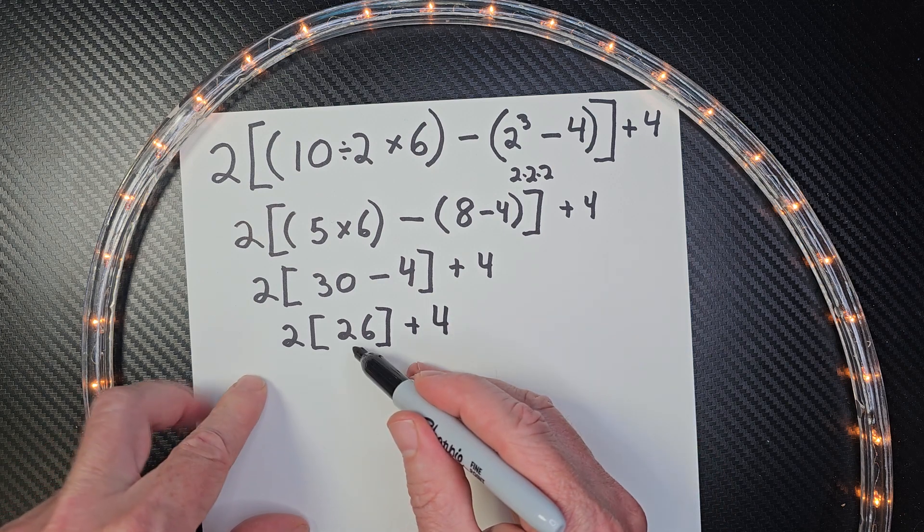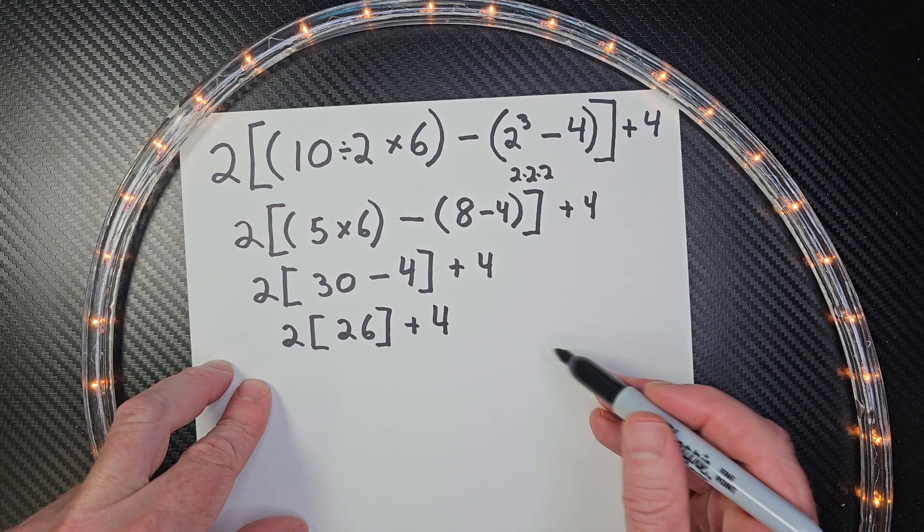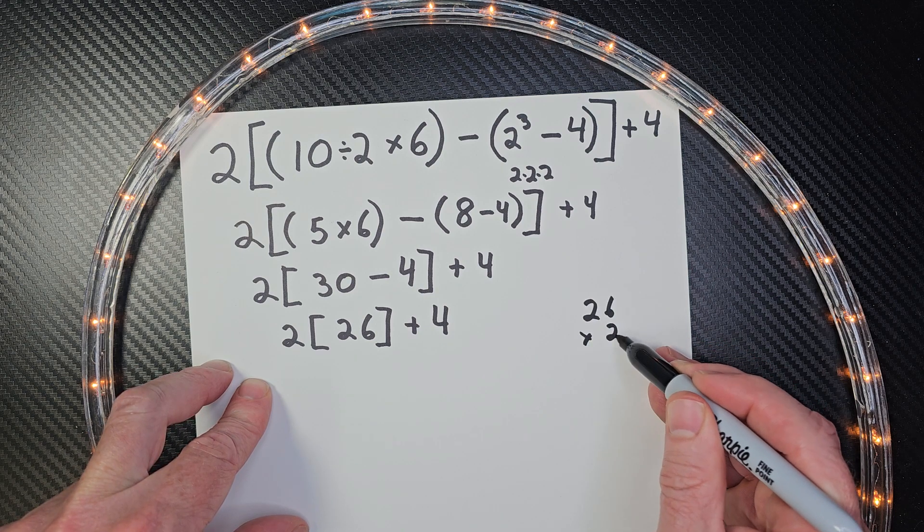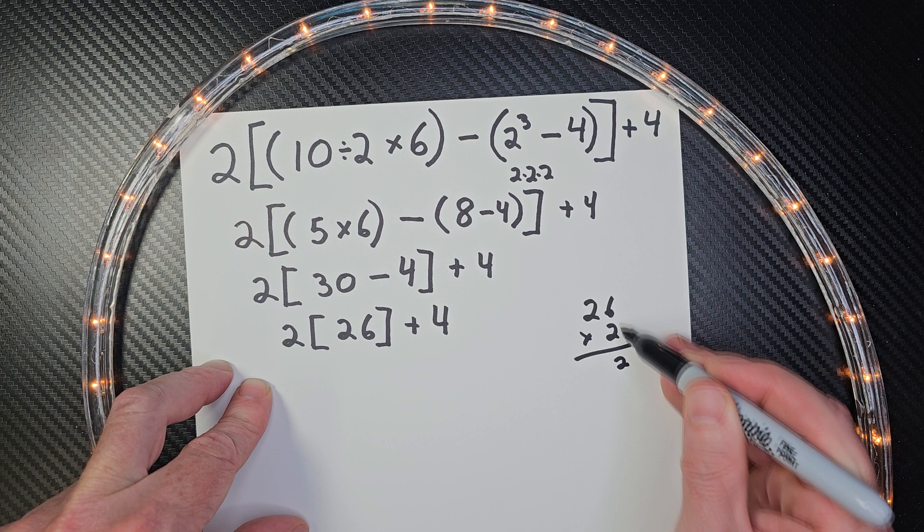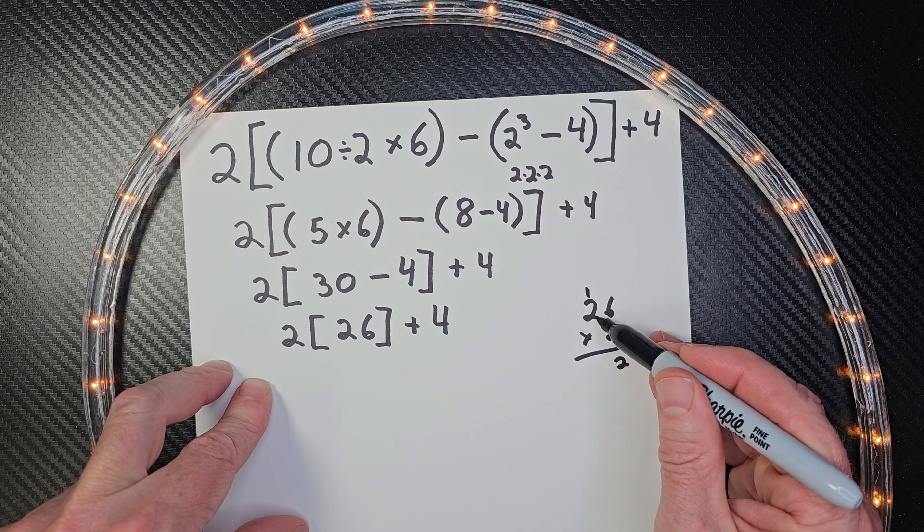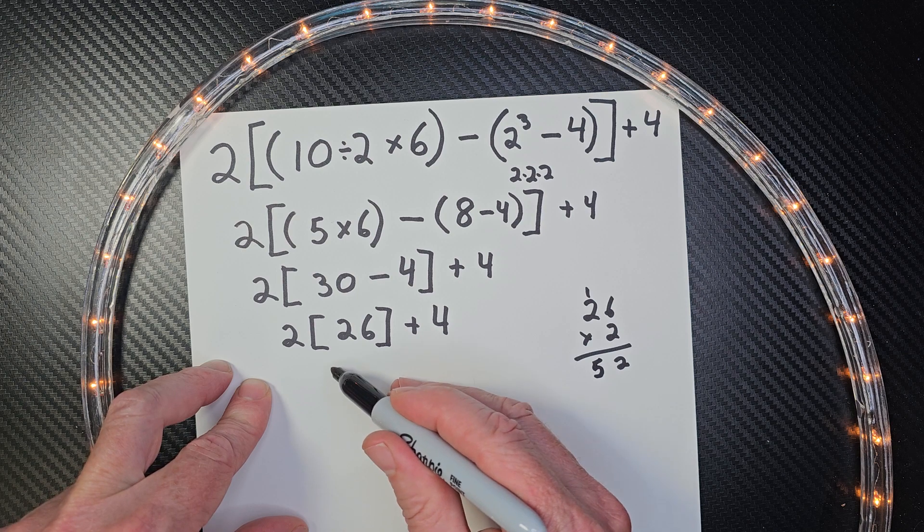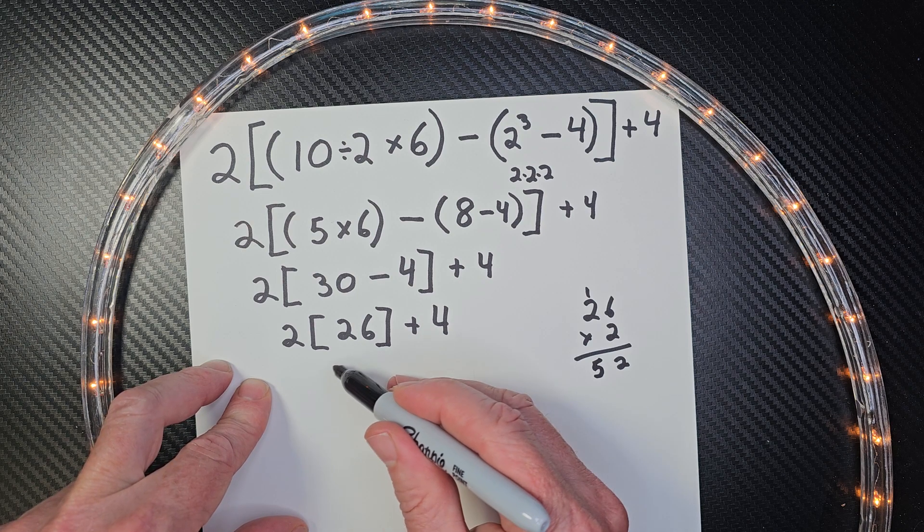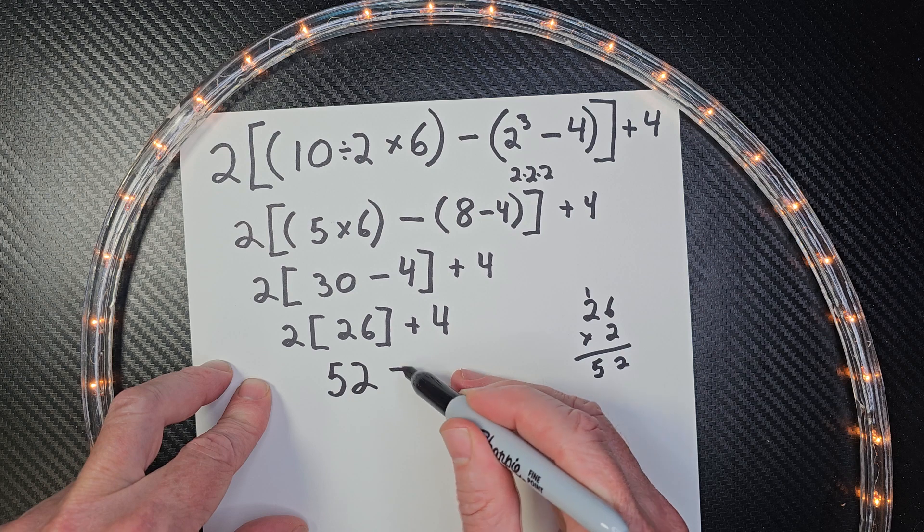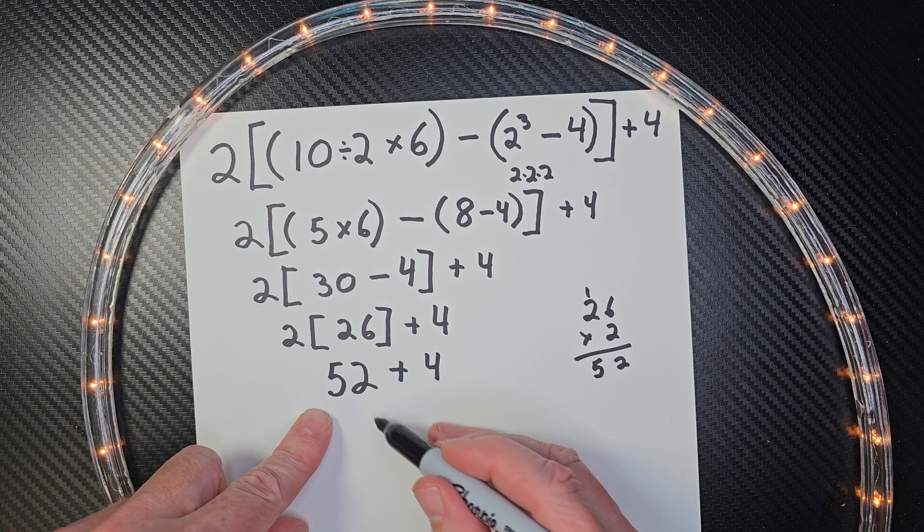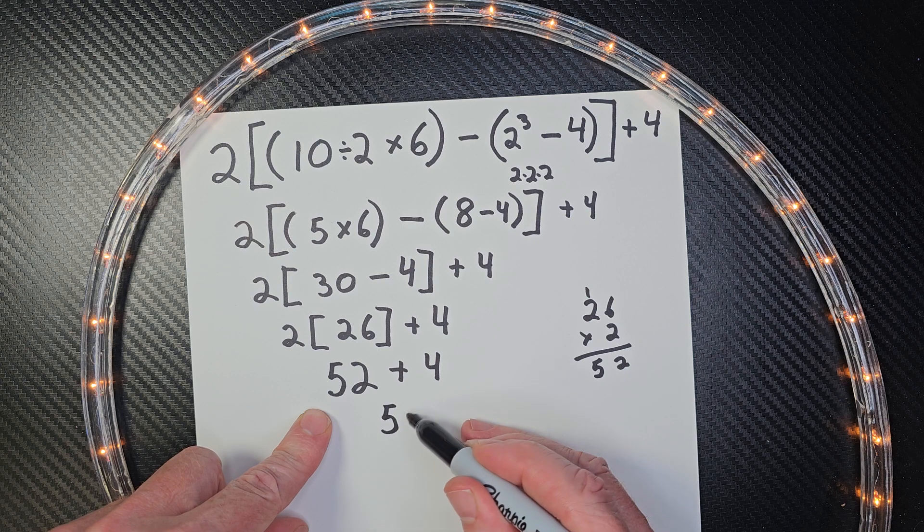And then 2 times 26. If you don't know that, all you have to do is take 26 times 2. 6 times 2 is 12. Carry the 1. 2 times 2 is 4. Plus the 1 would be 5. So that would be 52. So this is 52 plus 4. And then 52 plus 4 would be 56.